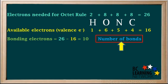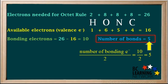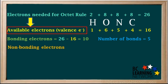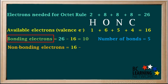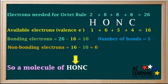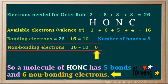Now we can determine the number of bonds in this molecule. We have a total of 10 bonding electrons, and each bond requires 2 electrons. So the number of bonds equals 10 divided by 2, which equals 5. Our molecule has 5 bonds. The number of non-bonding electrons is found by taking the total available electrons, which is 16, and subtracting the bonding electrons, which is 10. That gives us 6 non-bonding electrons. So HONC has 5 bonds and 6 non-bonding electrons.